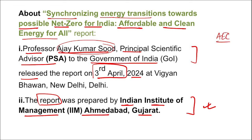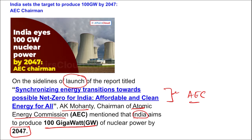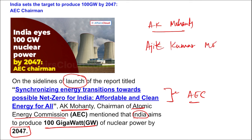To clarify: AK Mohatti stands for Ajit Kumar Mohatti, and he is the Chairman of the Atomic Energy Commission. On the sidelines of this report launch, he gave information about generating 100 gigawatts of nuclear energy by 2047.